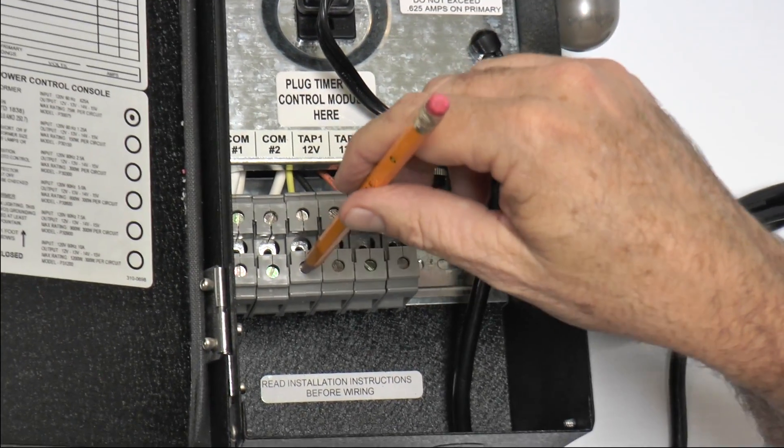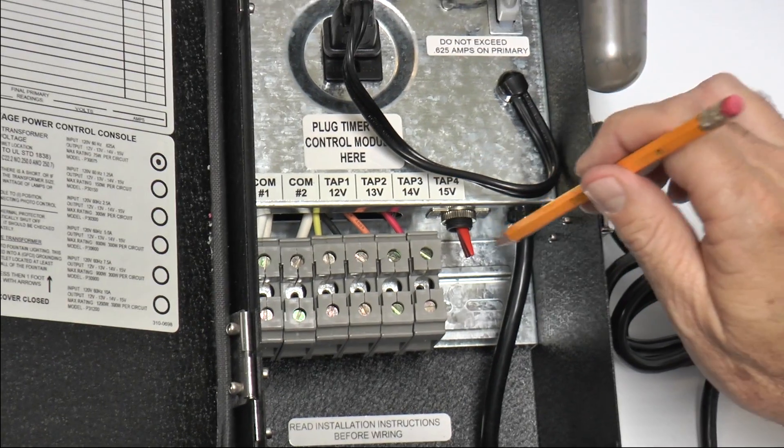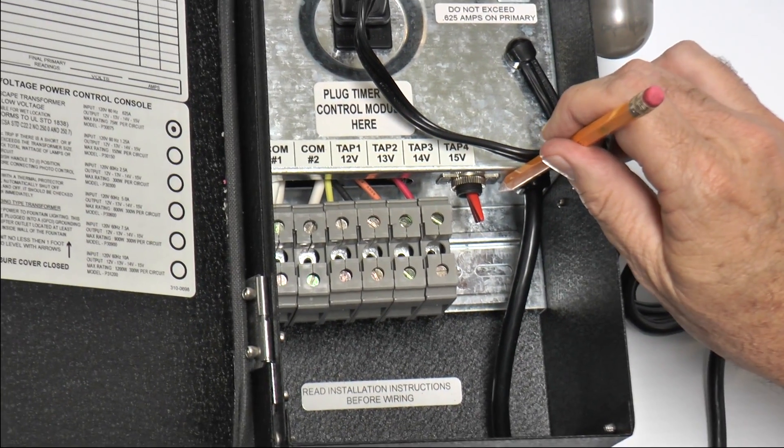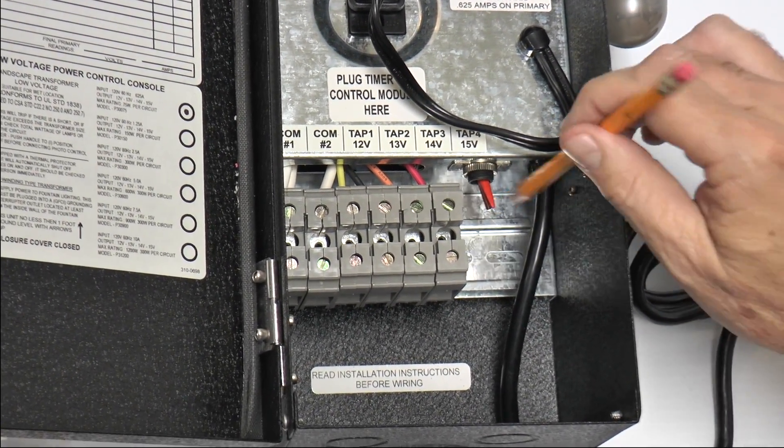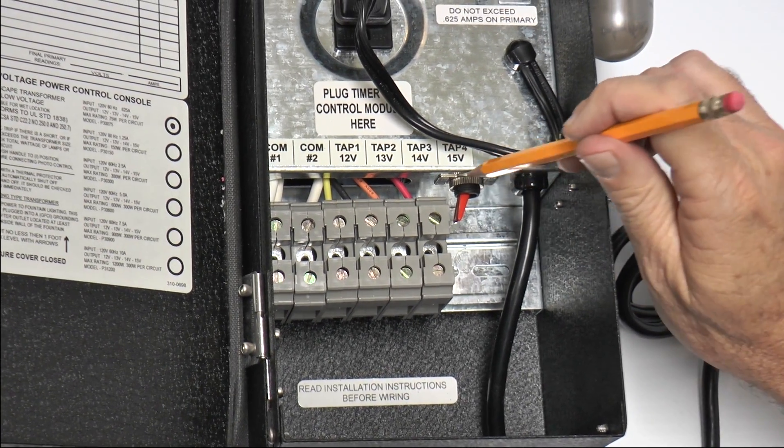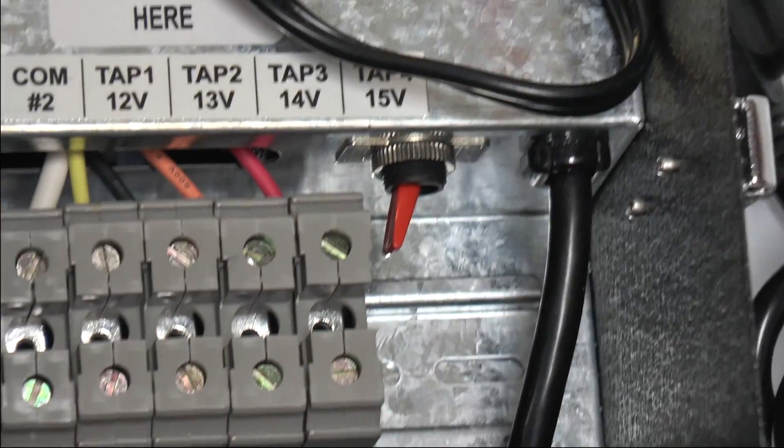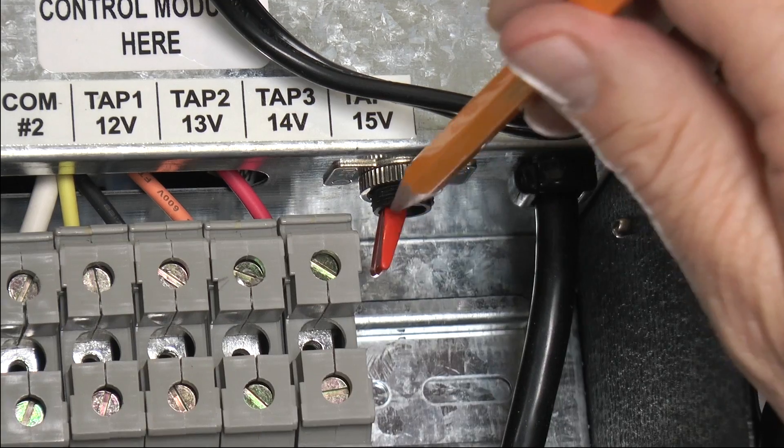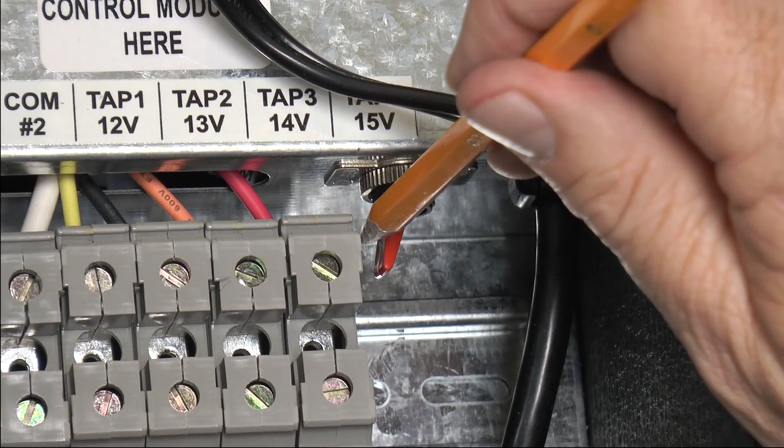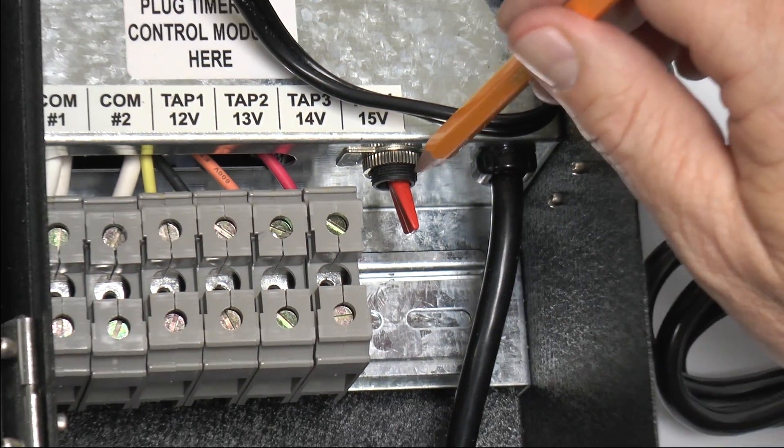The transformer also has an internal circuit breaker in case you put a dead short across it. This will pop over here to this position, it's the off position. If your transformer is all set up and it's not working, good chance the circuit breaker is in the off position. Just move it back over and put it here in the on position.